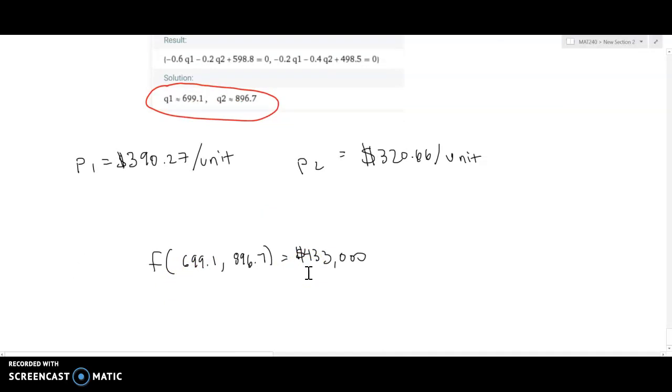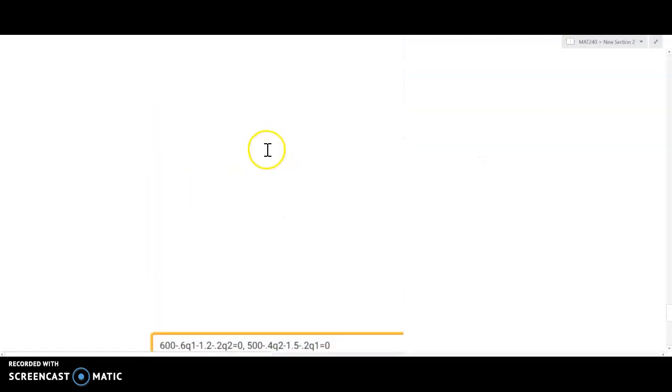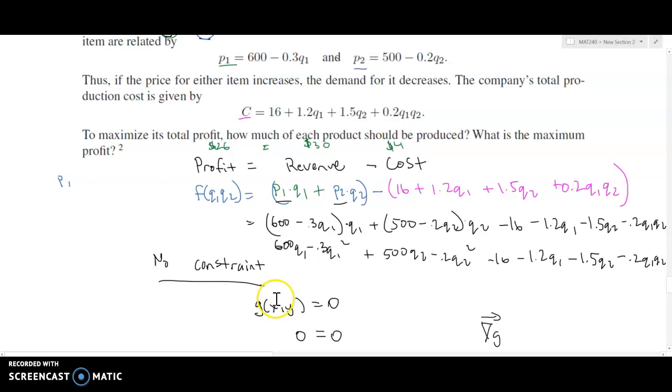We've now demonstrated how to solve constrained optimization problems and unconstrained optimization problems. The only difference being that for unconstrained optimization, we let g be the zero function.